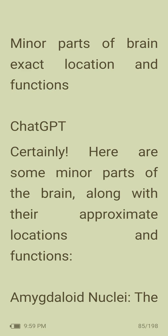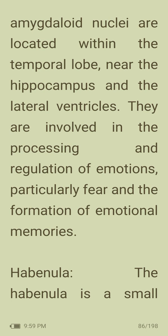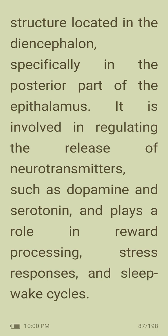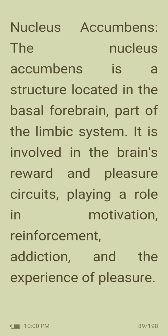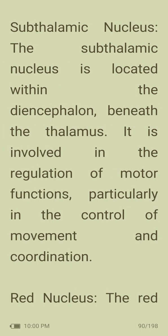Amygdaloid nuclei: located within the temporal lobe near the hippocampus and lateral ventricles, involved in the processing and regulation of emotions, particularly fear, and the formation of emotional memories. Habenula: a small structure in the diencephalon, specifically in the posterior part of the epithalamus, involved in regulating the release of neurotransmitters such as dopamine and serotonin, and plays a role in reward processing, stress response, and sleep-wake cycles. Subthalamic nucleus: located within the diencephalon beneath the thalamus, involved in the regulation of motor functions, particularly in the control of movement and coordination.